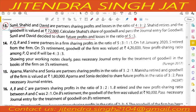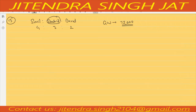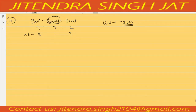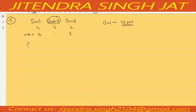Sunil and David decided to share future profits and losses in the ratio of 5:3 — this is the new ratio between Sunil and David. When Shahid retires, we need to give goodwill; Sunil and David need to give goodwill to Shahid, but they give it in their gaining ratio. So first we need to calculate the gaining ratio.